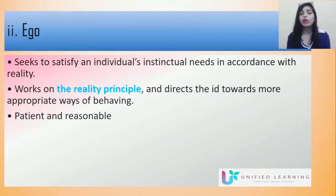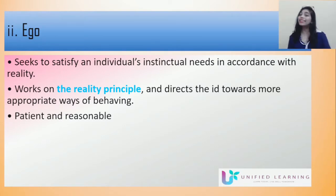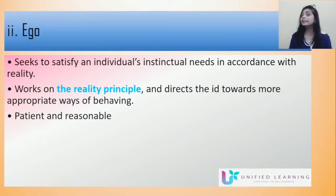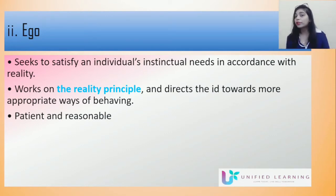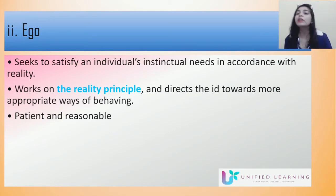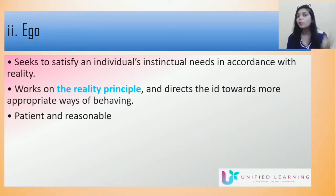The Ego works on the reality principle. It tries to guide or direct the Id towards more appropriate ways of behaving. For example, where the Id would just grab the hidden biscuits, once the Ego is developed it makes you more patient and reasonable — you think about whether you should eat or not.